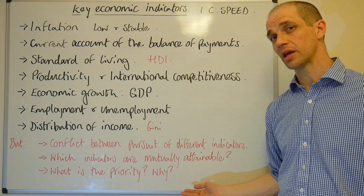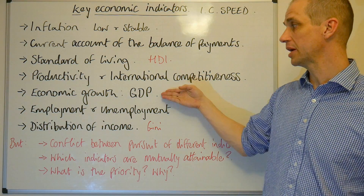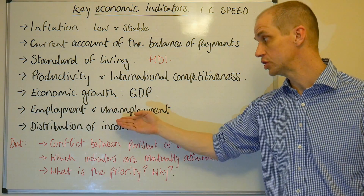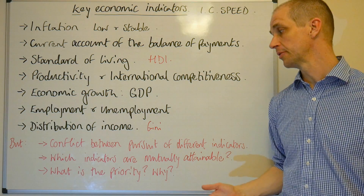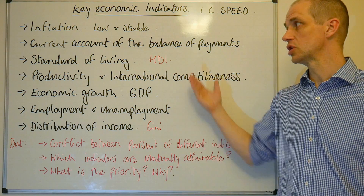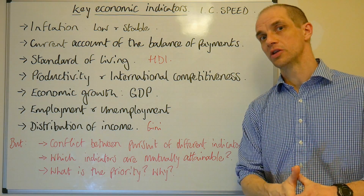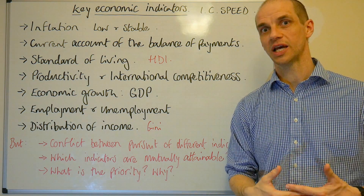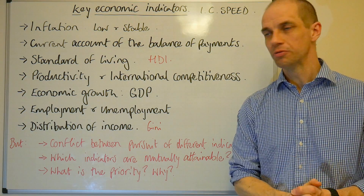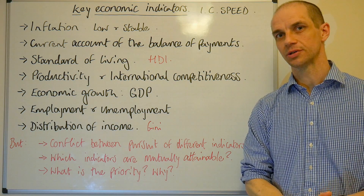Furthermore, we've also got to think about which indicators can actually be attained at the same point in time. For instance, how increasing GDP would help reduce unemployment and increase employment. And then we've got to think about what is actually the government's priority in pursuing any one of these indicators, as different governments have different views and different means of actually wanting to attain these different economic indicators. So there we go — it's a crucial lesson. We'll look at these in more detail in future lessons. Thanks, guys.